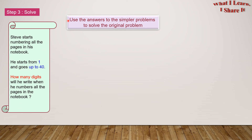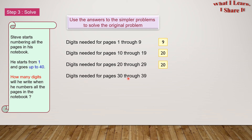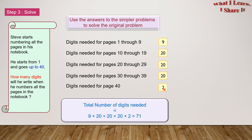Now we use the answers to the simpler problems to solve the original problem — we add all of them. Digits needed for pages 1 through 9 is 9, pages 10 through 19 is 20, pages 20 through 29 is 20, pages 30 through 39 is 20, and page 40 is 2. Total number of digits needed equals 9 plus 20 plus 20 plus 20 plus 2 equals 71.